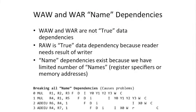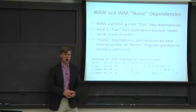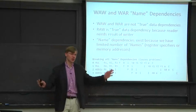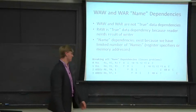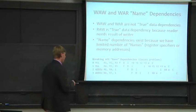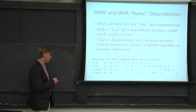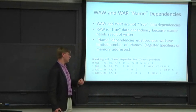Let's look at some example code here and see what can go wrong if you just ignore all the name dependencies. Like I said, they're not true dependencies, so maybe we just don't need them. We have a code sequence here: we have a mul, mul, and then two add immediates.